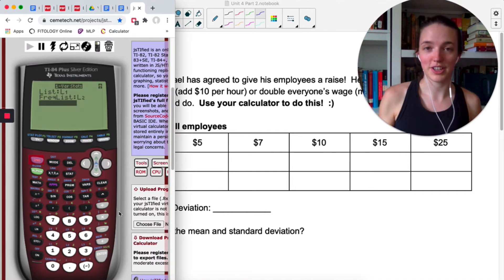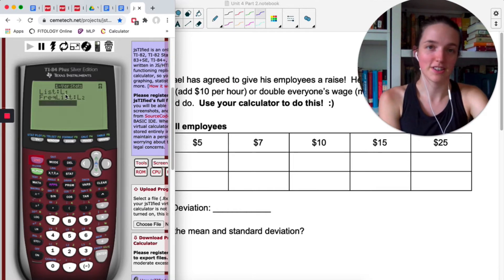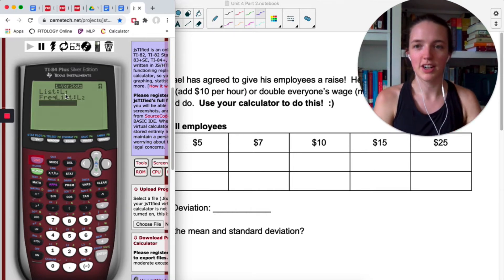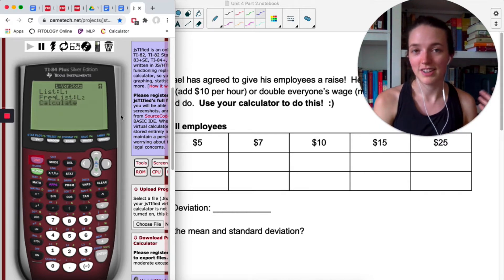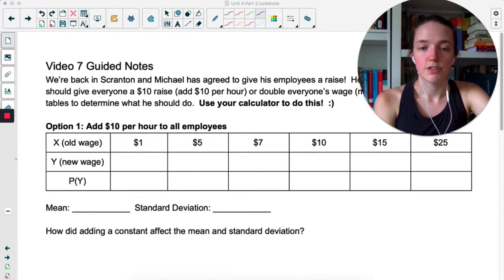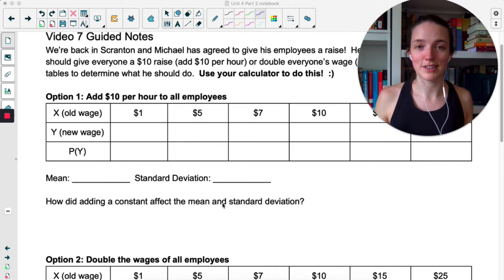Just as a quick recap, on your calculator you do one-var stats, list is wherever you have your X or in this case Y variable stored, so that would be the wages, and then frequency list is wherever you have your probabilities stored. And if you did the last video you might even have your probabilities still stored. So we're going to do that for option one and option two and then just answer the question that says how did this affect the mean and standard deviation. You should be able to do this entire page. Why don't you pause the video and try those now and then hit play when you're ready to recap.